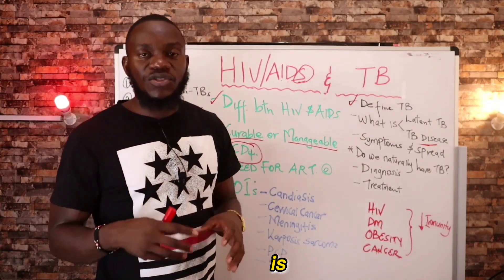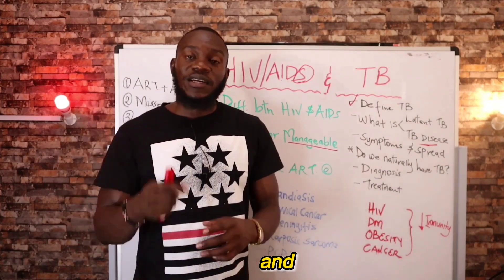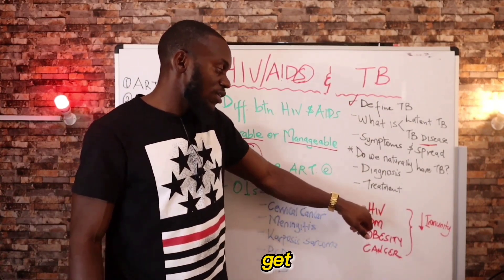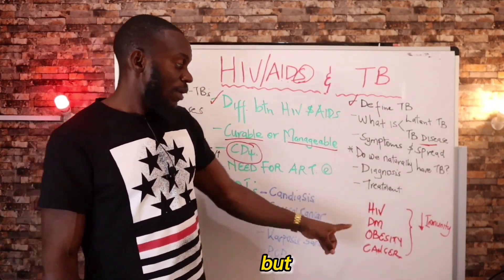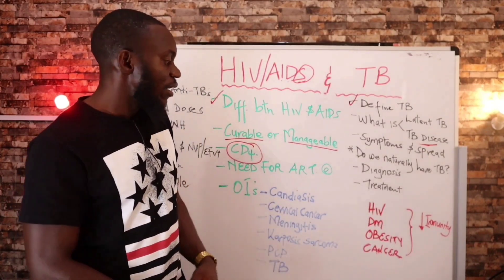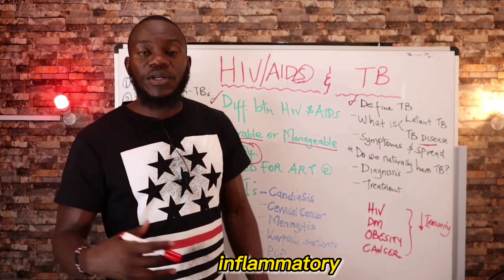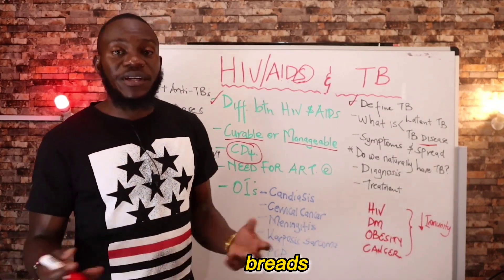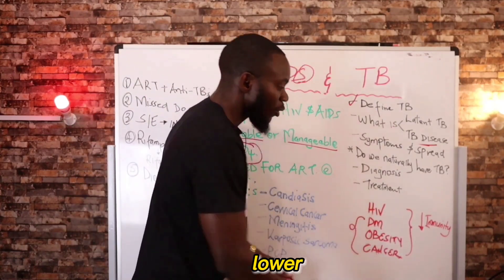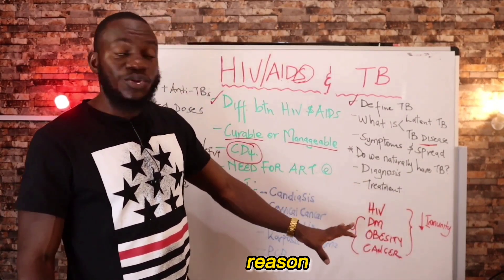Once your immunity goes down for any reason, latent TB can become active. What takes your immunity down? Basically eating poor diets, which can lead to diabetes, obesity, and cancer. HIV you can get through the channels we know, but diabetes, obesity, and cancer come as a result of poor diets. When you eat sugar, fructose, seed oils, and inflammatory foods like wheat products and breads, you get obesity, cancer, and inflammation — all of which lower your immunity.